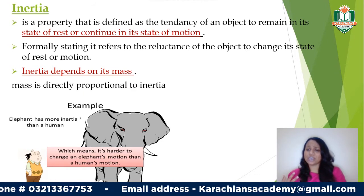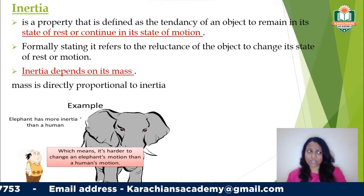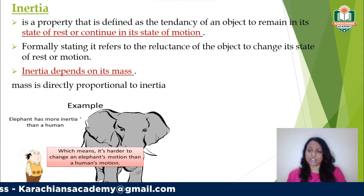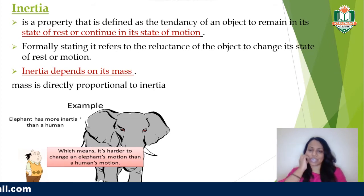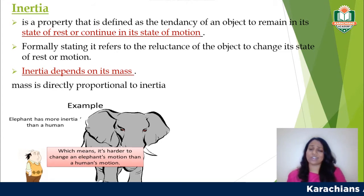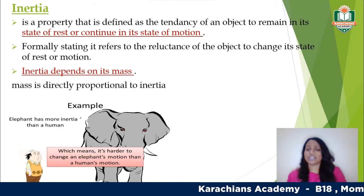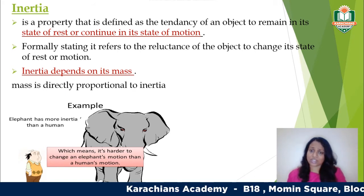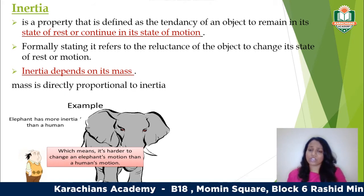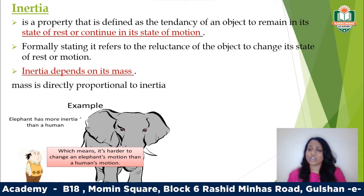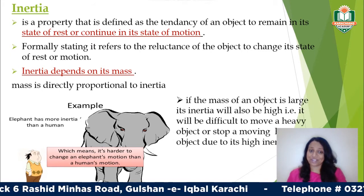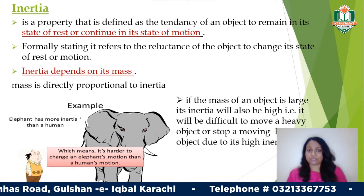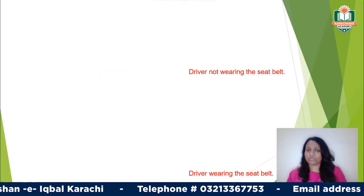For example, consider an elephant and a human being. It is harder for the elephant to change its motion compared to the person. If an elephant is walking fast it will be difficult to stop or change direction, but it will be easier for a person. As they say, when a large animal like an elephant is chasing you, running in its exact direction of motion causes confusion because the elephant is unable to change position so fast, giving you time to escape.